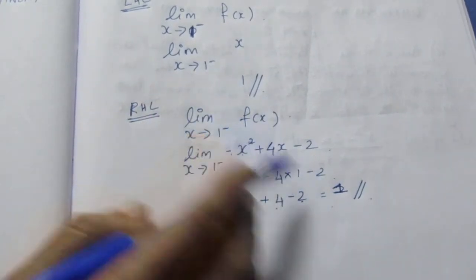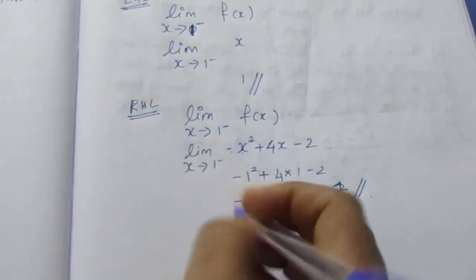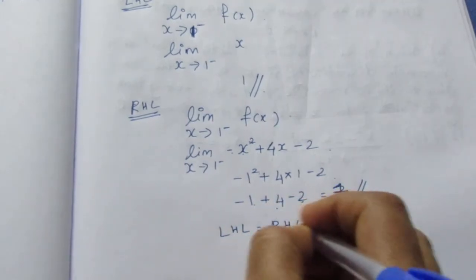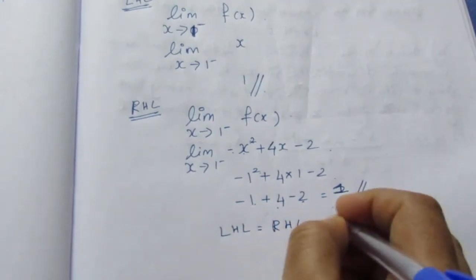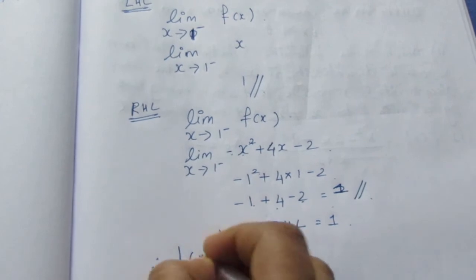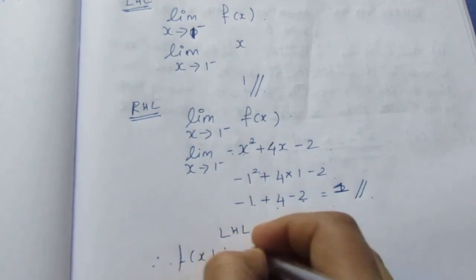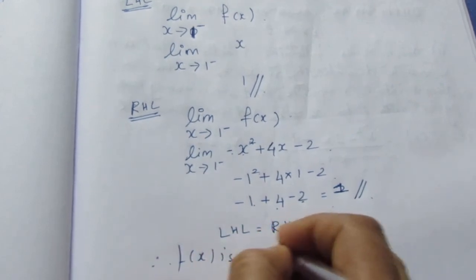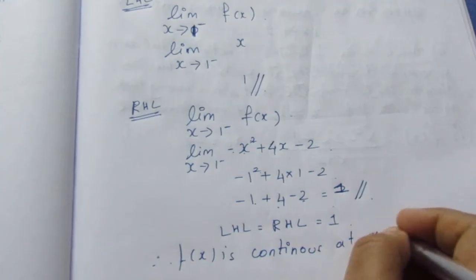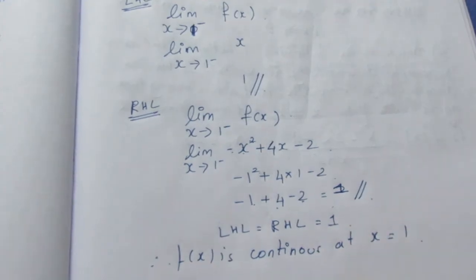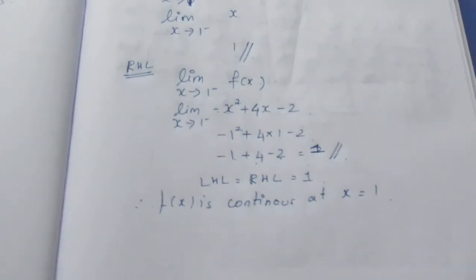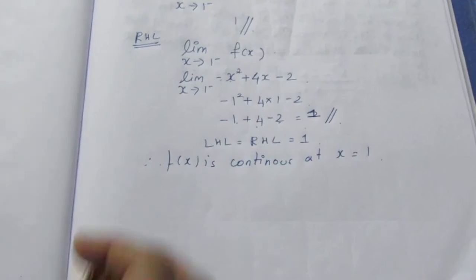So LHL equals RHL equals 1. Therefore, f(x) is continuous at x equals 1.